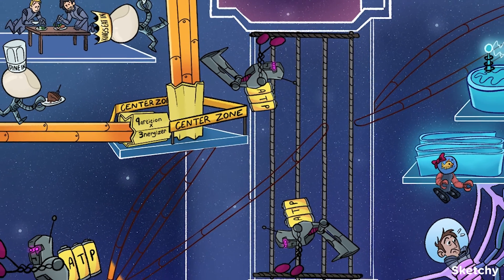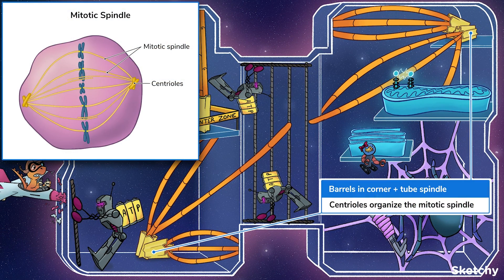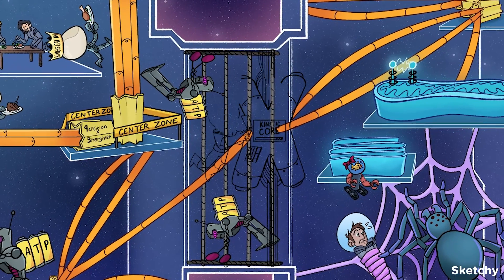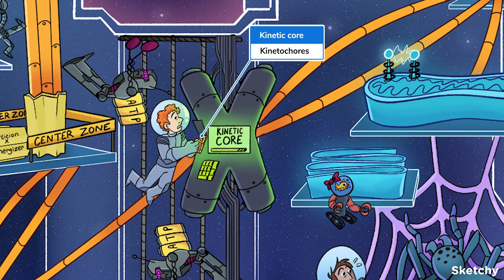Notice these barrels that drifted all the way to the corners of the cell ship? During cell division, the centrosome duplicates and the two pairs of centrioles migrate to opposite sides of the cell to organize the mitotic or meiotic spindles. These spindles assemble to pull apart duplicated chromatids so they eventually end up in different daughter cells. As you might have noticed, the tubes coming out of these barrels look a lot like a mitotic spindle forming. It looks like this crew member is connecting tubes to the middle of the chromosome-shaped kinetochore core, which represents the kinetochores.